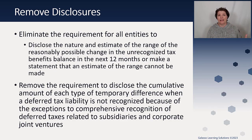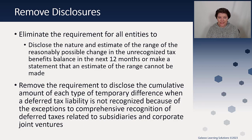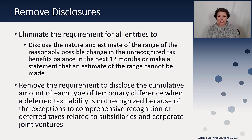However, while this introduces a lot of new disclosures, they do remove two existing disclosures. They eliminate the requirement for all entities to disclose the nature and estimate of the range of the reasonably possible change in the unrecognized tax benefits for the next 12 months. They also remove the requirement to disclose the cumulative amount of each type of temporary difference when a deferred tax liability is not recognized — in the scenario related to corporate joint ventures and subsidiaries. So these are current disclosures being removed while a better disaggregation takes place.